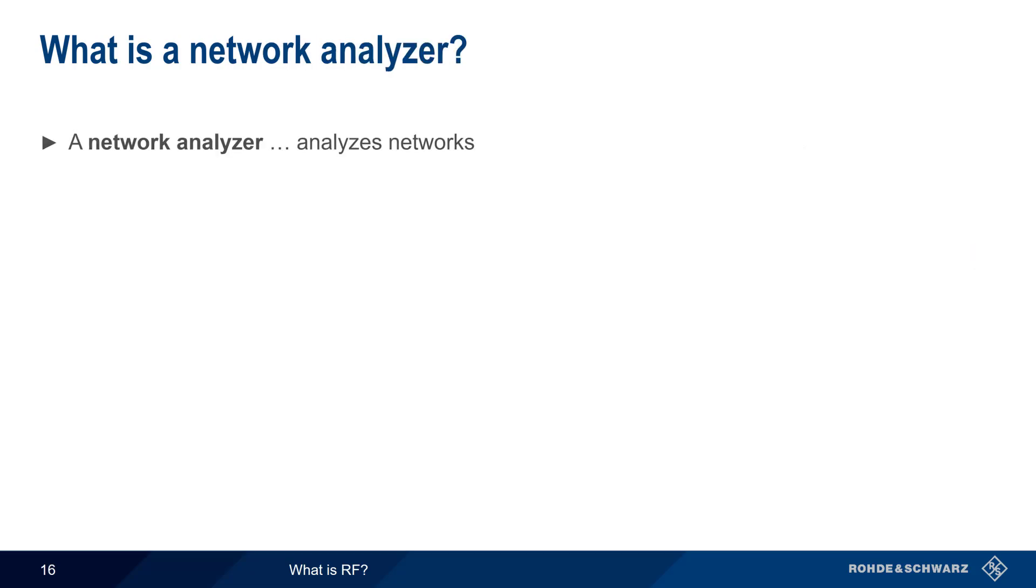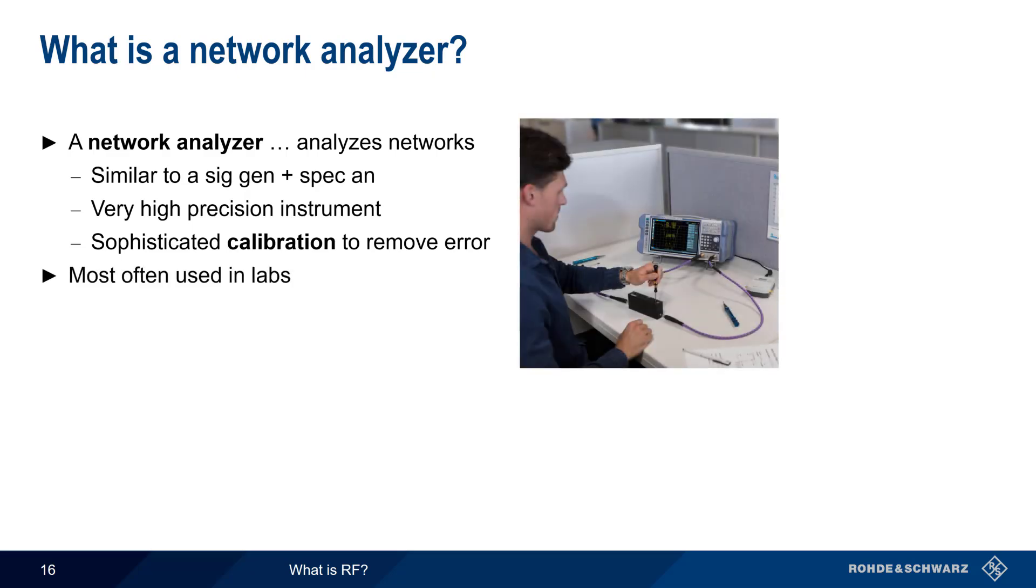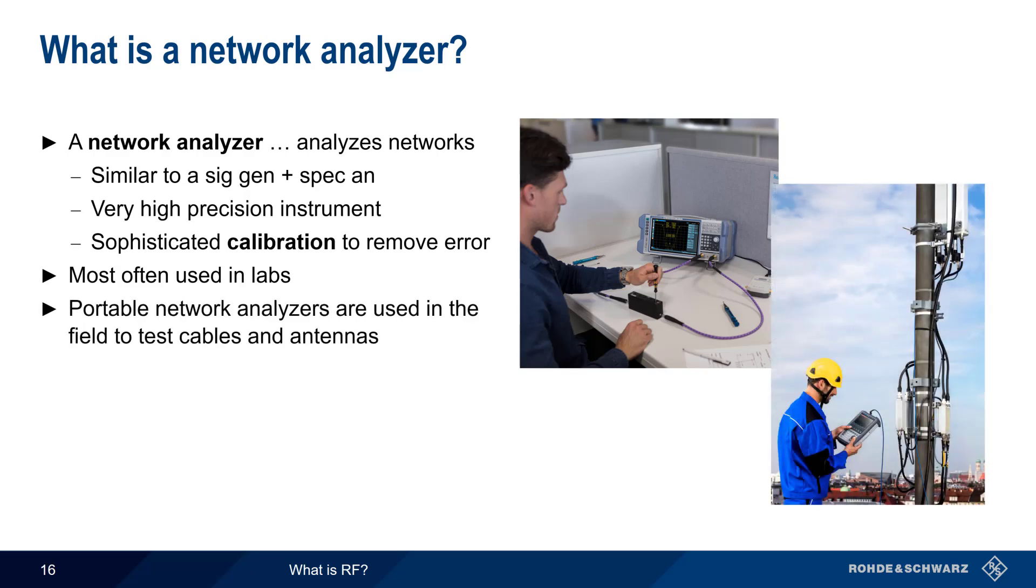In order to analyze networks, we use a network analyzer. A network analyzer both generates and measures RF energy simultaneously, and thus is similar to the combination of a signal generator and spectrum analyzer. In most cases, network analyzers are very high-precision instruments that are able to measure small variations or changes in signals, and sophisticated calibration routines are used to further minimize or remove error. Since they are most often used to measure components, network analyzers are most commonly found in labs, although portable network analyzers can be used in the field for testing things such as cables and antennas. You may also hear network analyzers referred to as vector network analyzers, or VNAs.